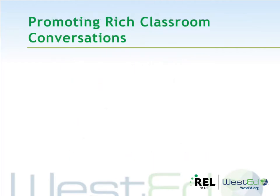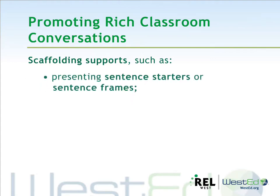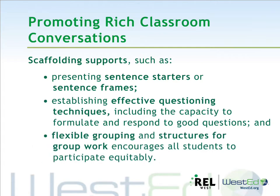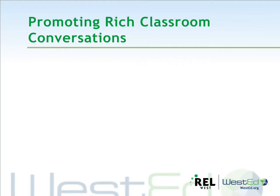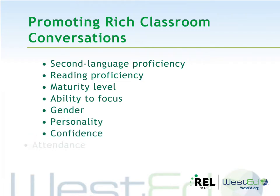Beyond setting up the rules and procedures for successful academic conversations, diverse learners also need scaffolding supports to promote rich classroom conversations. These may include presenting sentence starters or sentence frames, establishing effective questioning techniques including the capacity to formulate and respond to good questions, and flexible grouping and structures for group work that encourage all students to participate equitably. Consider student needs when assigning partners, particularly early in the year. Factors include second language proficiency, reading proficiency, maturity level, ability to focus, gender, personality, confidence, and attendance.